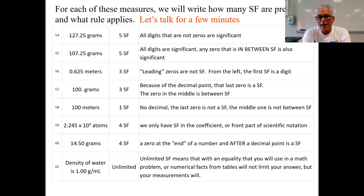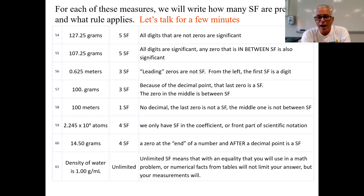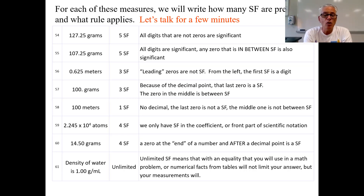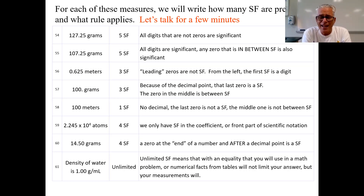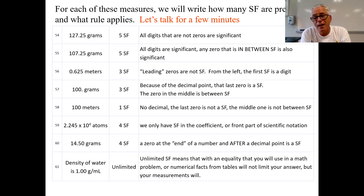Significant figures — I'm not going to lie, they are annoying. You're going to be annoyed by this. We're going to do a lot of practice, and I might even make a PowerPoint. All you have to do is practice. If you don't practice, you're going to make a lot of mistakes. The rules are easy, but there are six or seven of them — mostly about zeros. Zeros are everywhere: in the middle, at the end, with a decimal or without.